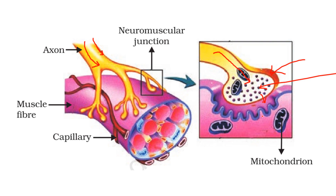Going back to our first example of the glass of water: the brain sends information to the motor neuron, and this motor neuron connects to and informs the muscle fibers through the neuromuscular junction, instructing them to contract. This enables us to pick up that glass of water and drink it.